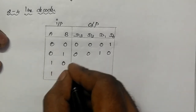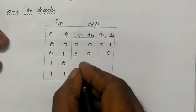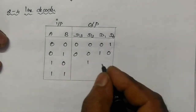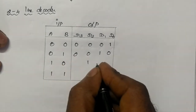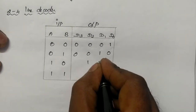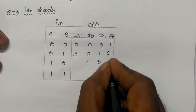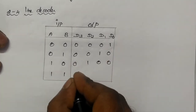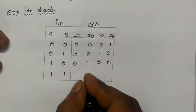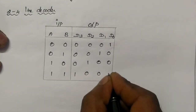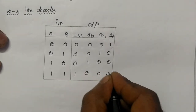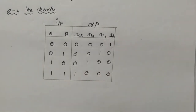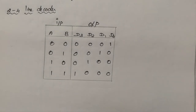When input is 1,0, D2 output is 1 and remaining outputs have the value 0. When 1,1, D3 output is 1 and remaining outputs are 0. This is the truth table.